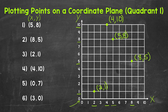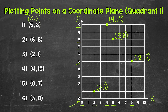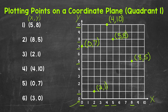Let's move on to number 5, where we have 0, 7. Now the x-coordinate is 0, so we don't move over along the x-axis at all. And then our y-coordinate is 7, so we go up from 0 to 7 and plot this point right here, so 0, 7. Whenever you have an x-coordinate of 0, the point is going to be right on the y-axis — something to keep in mind.